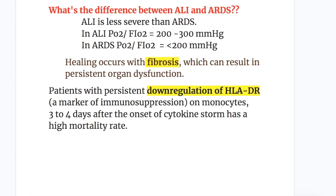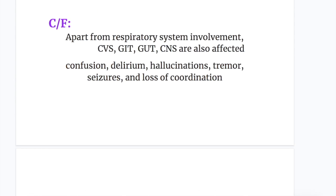Patients with persistent down-regulation of HLA-DR — a marker of immunosuppression — on monocytes three to four days after the onset of cytokine storm have a high mortality rate. The clinical features, apart from respiratory system involvement, include CVS, GIT, GUT, and CNS involvement. CNS features include confusion, delirium, hallucinations, tremors, seizures, and loss of coordination.